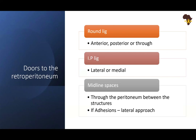How do we enter the retroperitoneum? What are the doors? The round ligament — we can go anterior, posterior, or through it during hysterectomy. The IP ligament — we can go lateral or medial to get into the retroperitoneal space. And we enter the midline spaces through the peritoneum between these structures. If there are adhesions due to previous surgery or anatomical distortion due to endometriosis, you do not enter these spaces directly in the midline — you use a lateral approach.